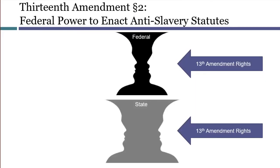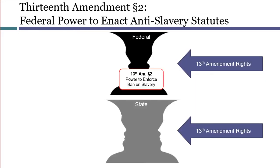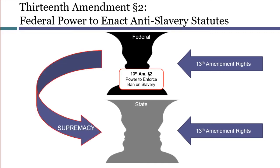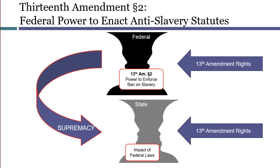Section 2 of the 13th Amendment therefore expanded the power of the federal government into a new area, expanding Congress's authority. Of course, when Congress uses its constitutional power to make laws, those laws are supreme over state laws. So the result would be a corresponding reduction in the power of states to enact conflicting laws.